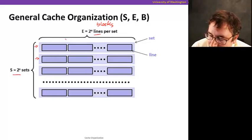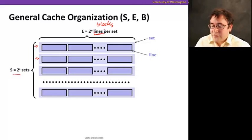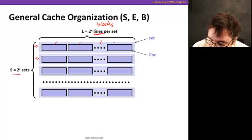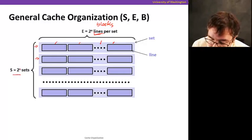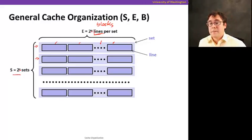So, a set has a number of lines, which is the same thing as the way. If I say a cache is a four-way associative, it means that we're going to have one, two, three, four lines in a set. So, when a cache has 2^S sets and 2^E lines.